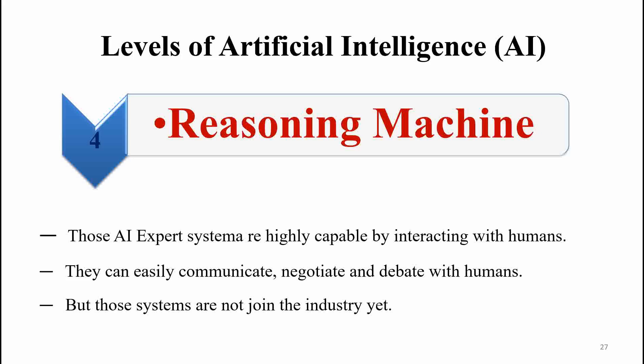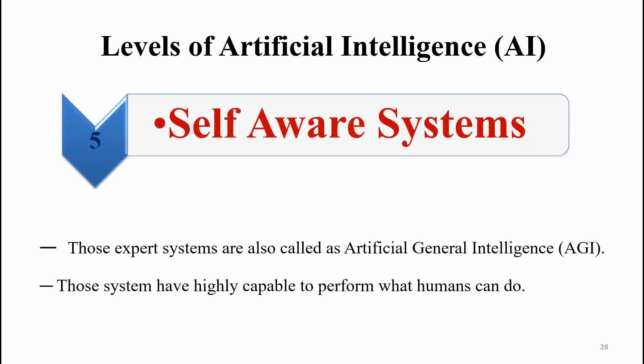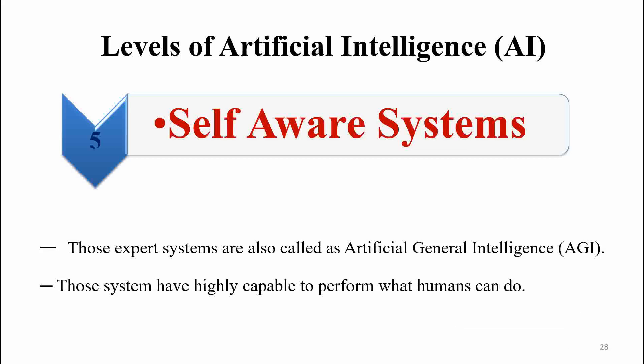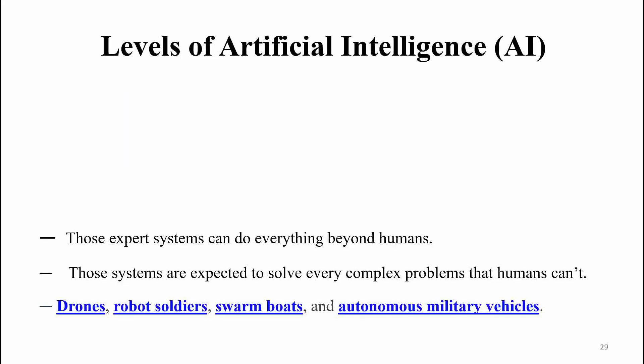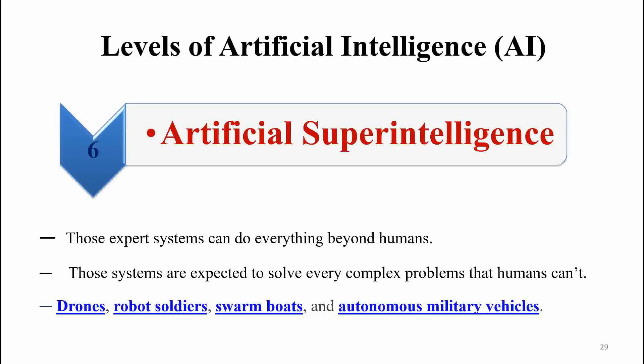The next one is self-aware systems. Those expert systems are also called artificial general intelligence. Those systems are highly capable to perform what humans can do. Self-aware systems can perform every type of activity in different sectors — they can serve any area like a radical mission of our system.